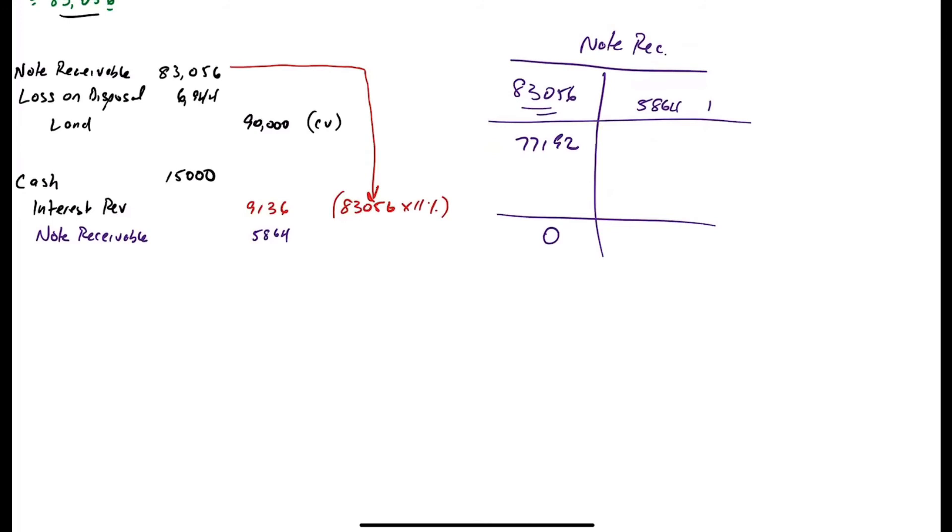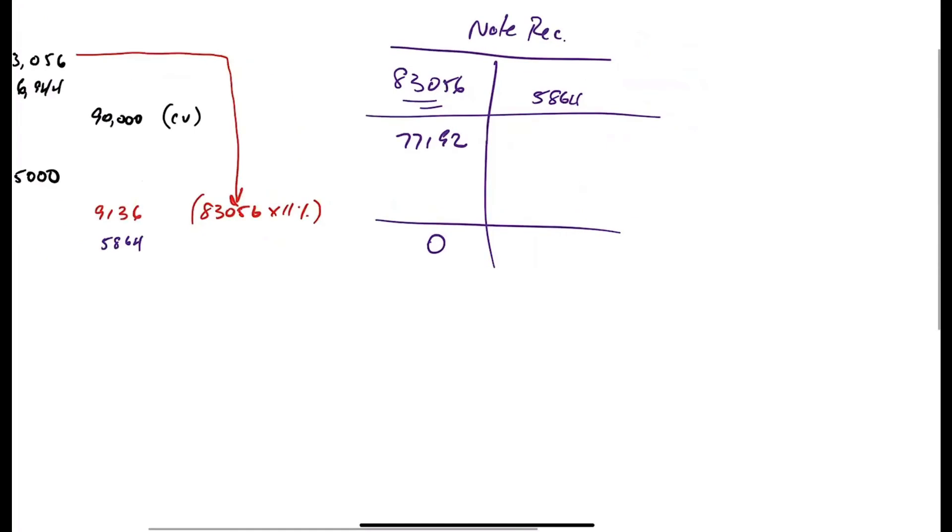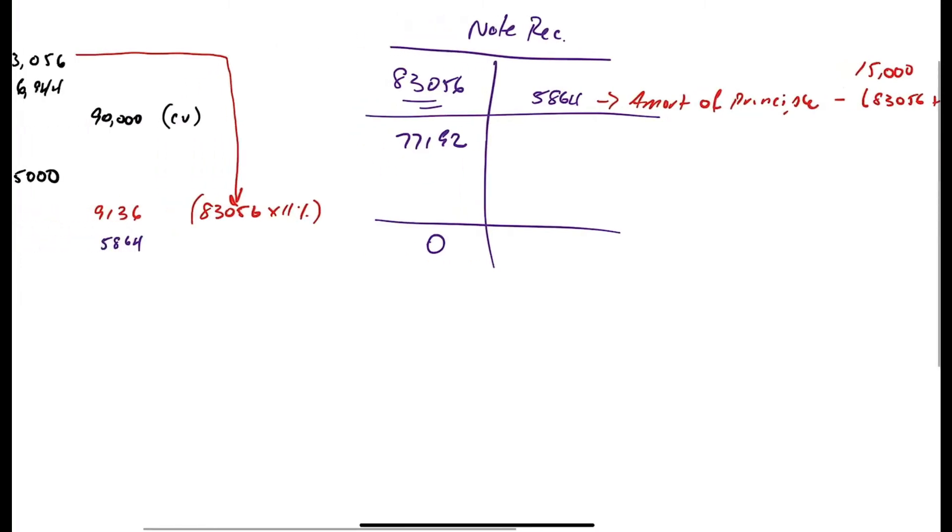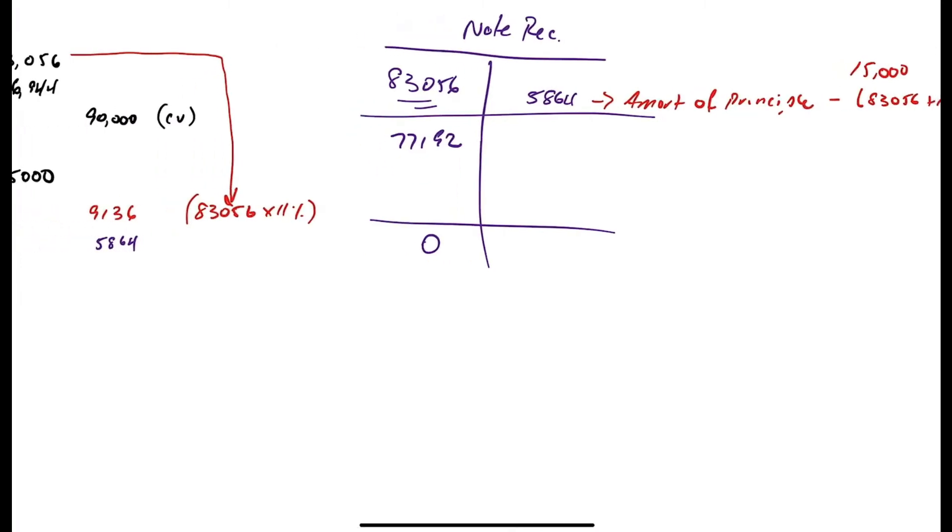Then you would calculate the interest on that, and then subtract from the payment to get the next year's interest. So this $5,864 is the amortization of the principal, which is the $15,000 payment minus $83,056 times 11%. And that happens every year. And as the interest portion of the payment drops...